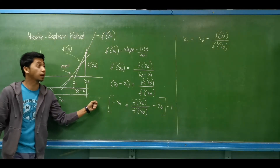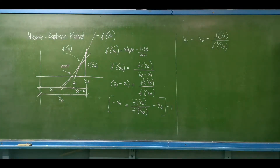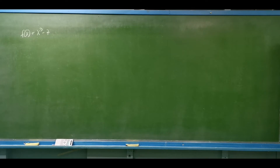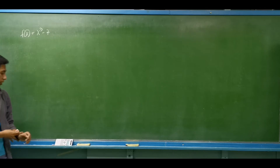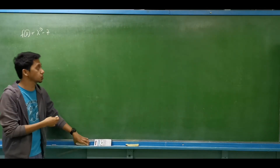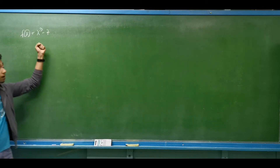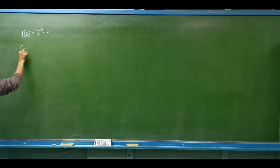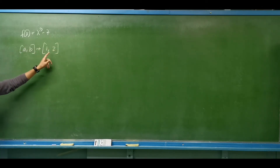So that is the concept of the Newton-Raphson method. Let's see one example. We have f of x equals x cubed minus 7. Before we proceed with the iteration, let us first identify a small range wherein we can be sure that the root of this function is included. Let's say we consider a range — let's say the root of this function is somewhere between 1 and 2.